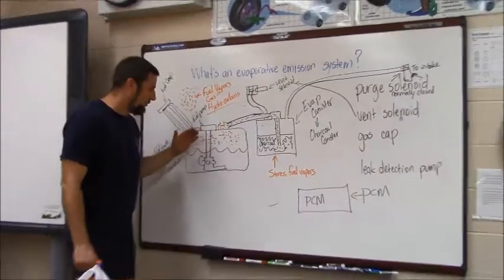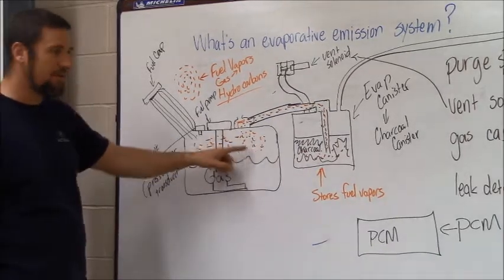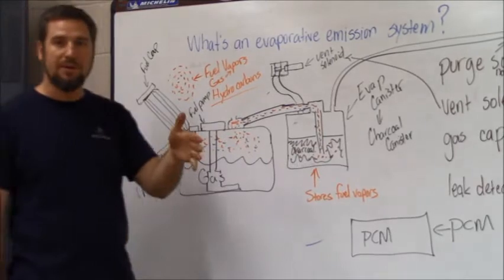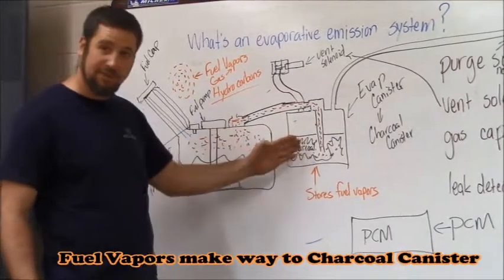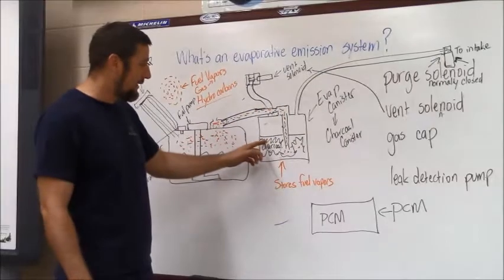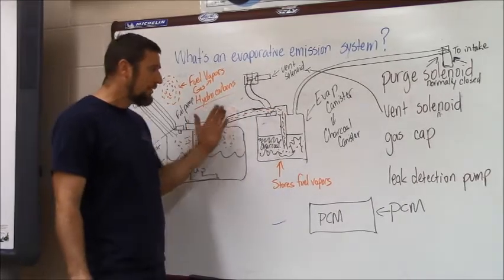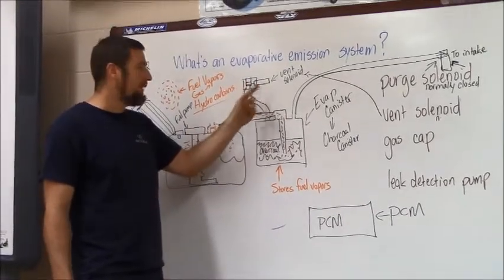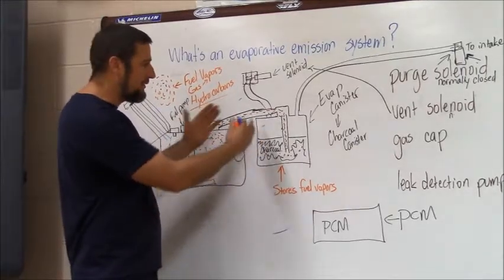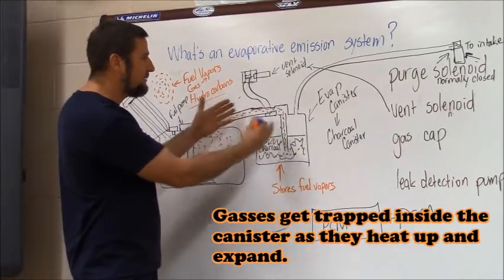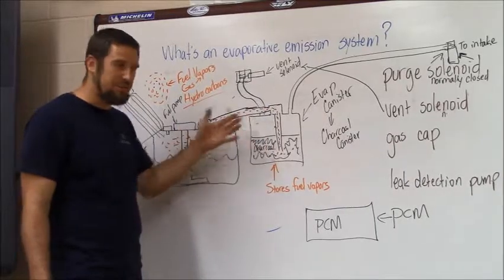On any given day, fuel vapors are going to evaporate — that's what the little orange dots represent here. Thanks to the evaporative emission system, those fuel vapors make their way into the charcoal canister, which is filled with charcoal. Charcoal acts as a sponge: it absorbs and traps those vapors. The vent solenoid is normally open, so as the tank heats up and gases expand, the expanding air is allowed to escape through the vent solenoid.